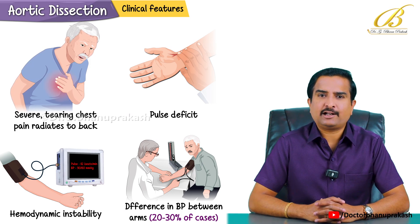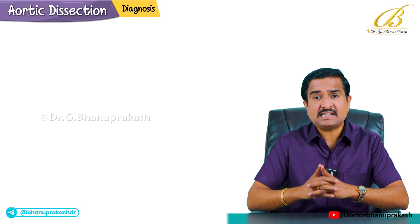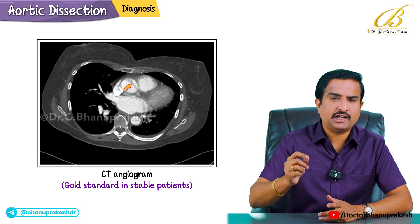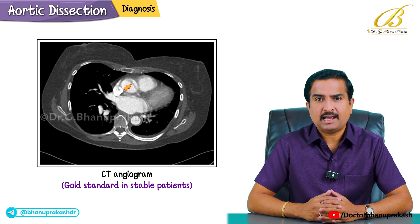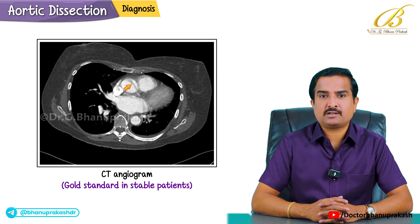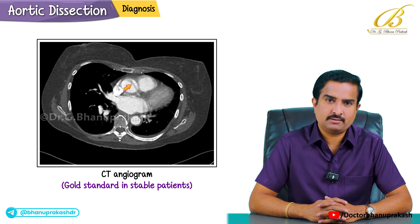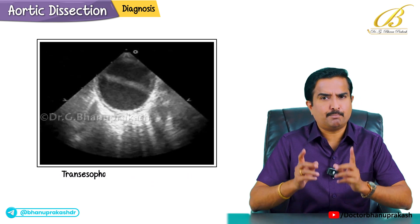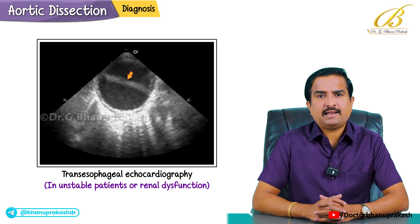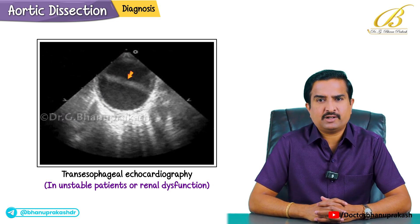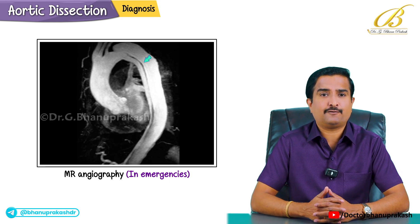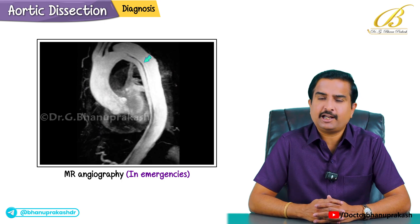The gold standard in stable patients is a CT angiogram, which provides a detailed view of the aorta and helps differentiate the true and false lumen. In unstable patients or those with renal dysfunction, transesophageal echocardiography is preferred because it is quick, bedside, and highly accurate. MR angiography is another option but is rarely used in emergencies due to the time required and the risk of nephrogenic systemic fibrosis in patients with kidney disease.